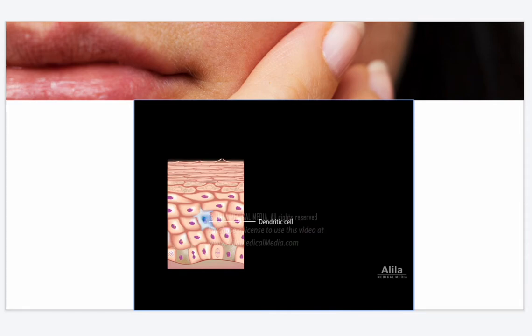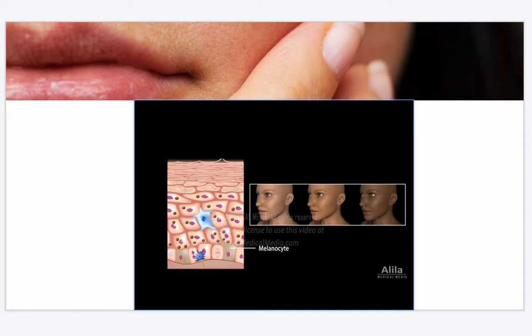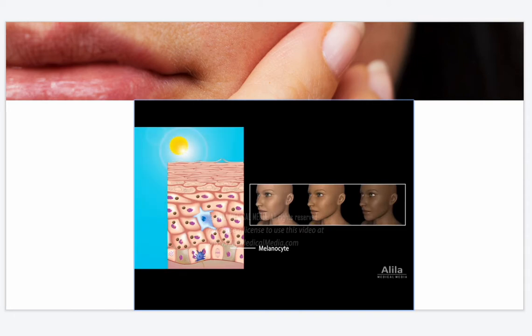The epidermis also contains immune cells, touch sensory cells, and melanocytes. Melanocytes produce the pigment melanin and transfer it to the keratinocytes. The amount of melanin produced is the major determinant of skin color. Melanin synthesis is stimulated by UV light and is thought to be a protective mechanism against UV radiation damage.